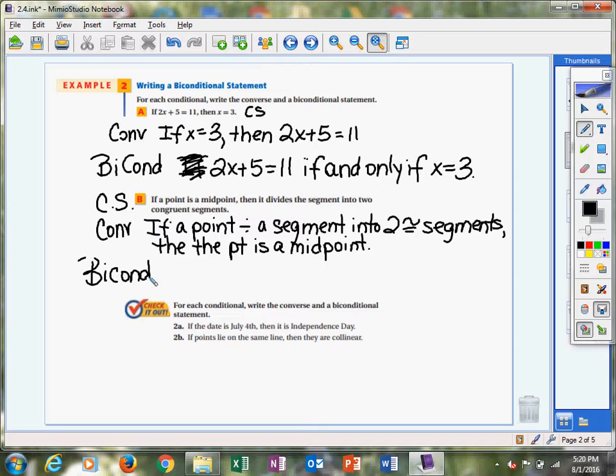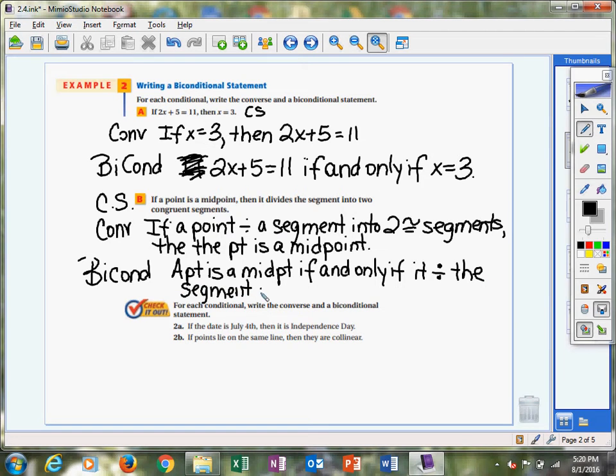You have to justify everything. So we're going to practice writing this out. Okay, so our biconditional is going to be this. A point is a midpoint if and only if it divides the segment into two congruent segments.